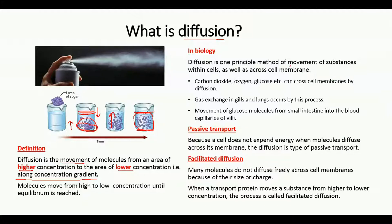Diffusion is helpful in the movement of substances within the cell as well as across the cell membrane. For example, carbon dioxide, oxygen, and glucose can cross the cell membrane by the process of diffusion. Similarly, gaseous exchange in the gills and lungs also takes place by the process of diffusion.